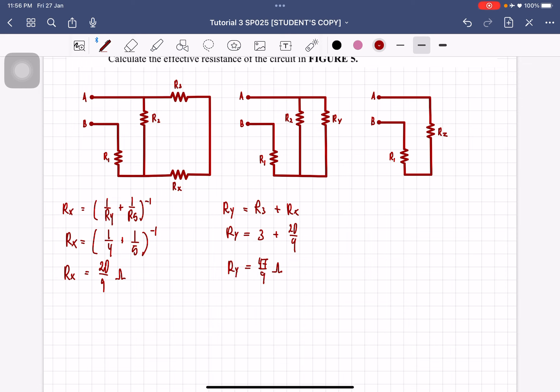So after that, after you combine R3 and Rx, you will get this circuit here. So from here, you can then again resolve by pair. This is a pair that you can simplify, so it will then become Rz, which is connected in parallel. So it's gonna be 1 over R2 plus 1 over Ry to the power of negative 1, which will then be 1 over 2 plus 1 over 47 over 9 to the power of negative 1, which will then be equal to 94 over 65 ohm.